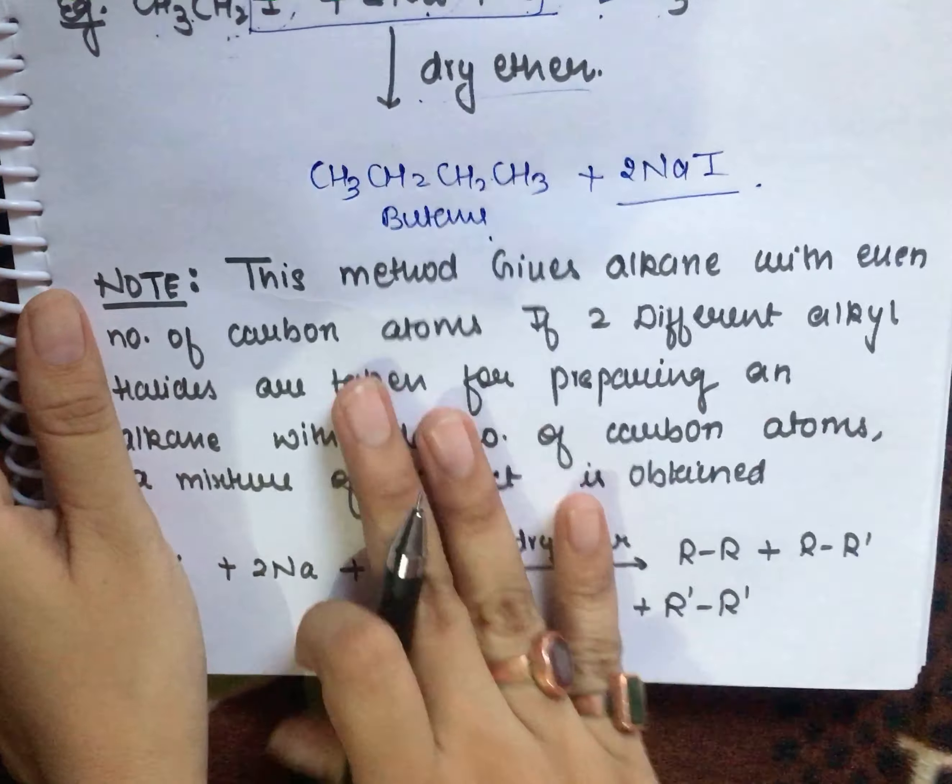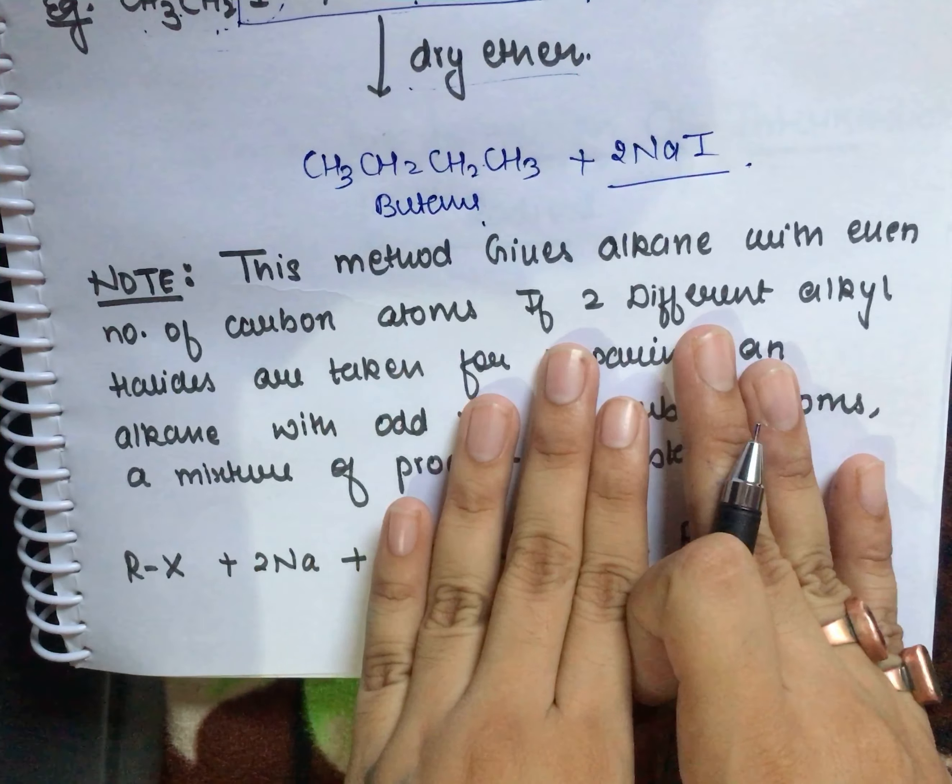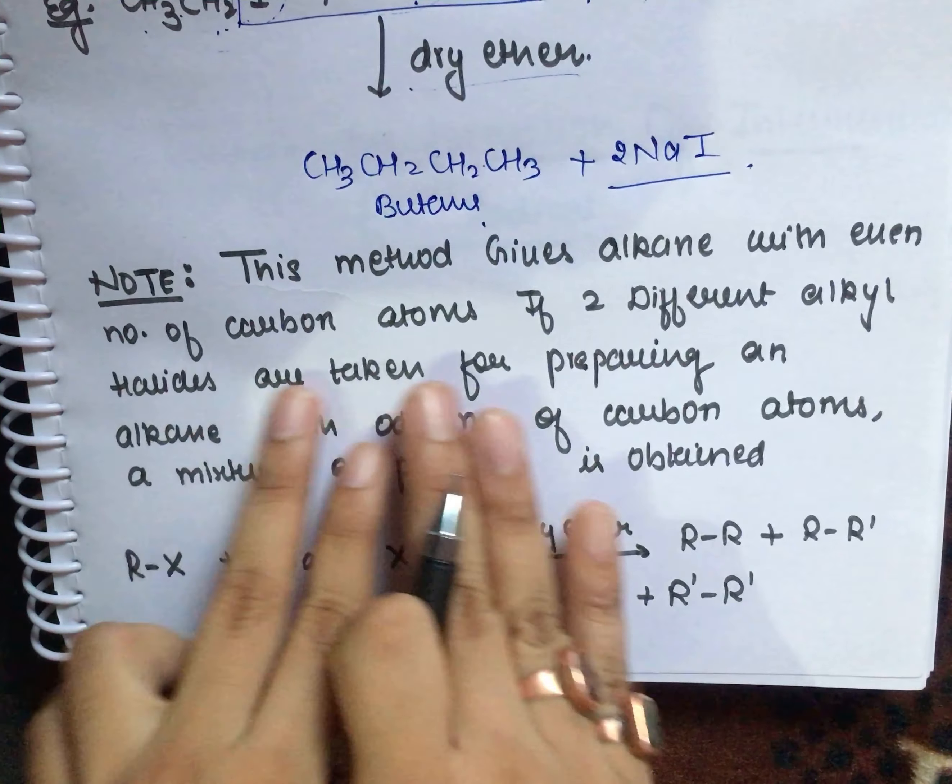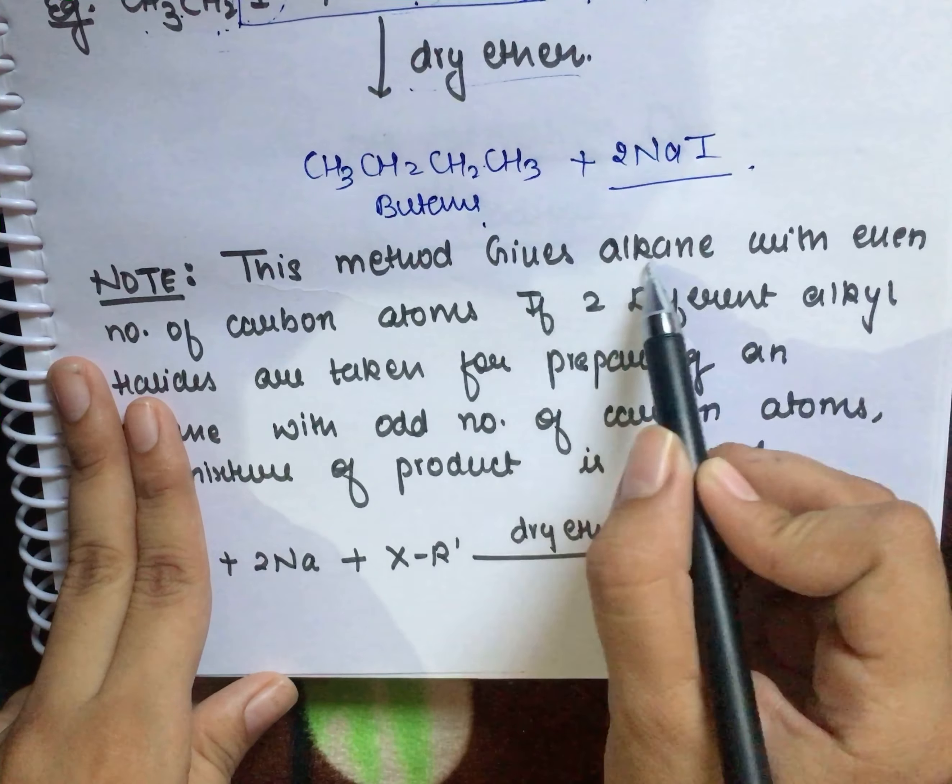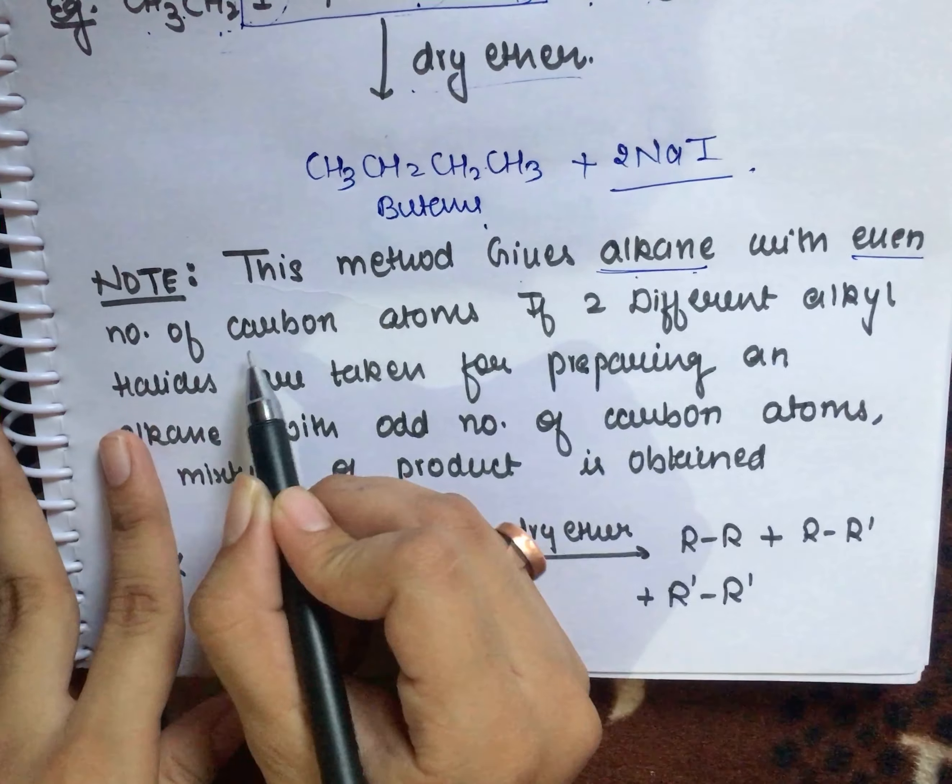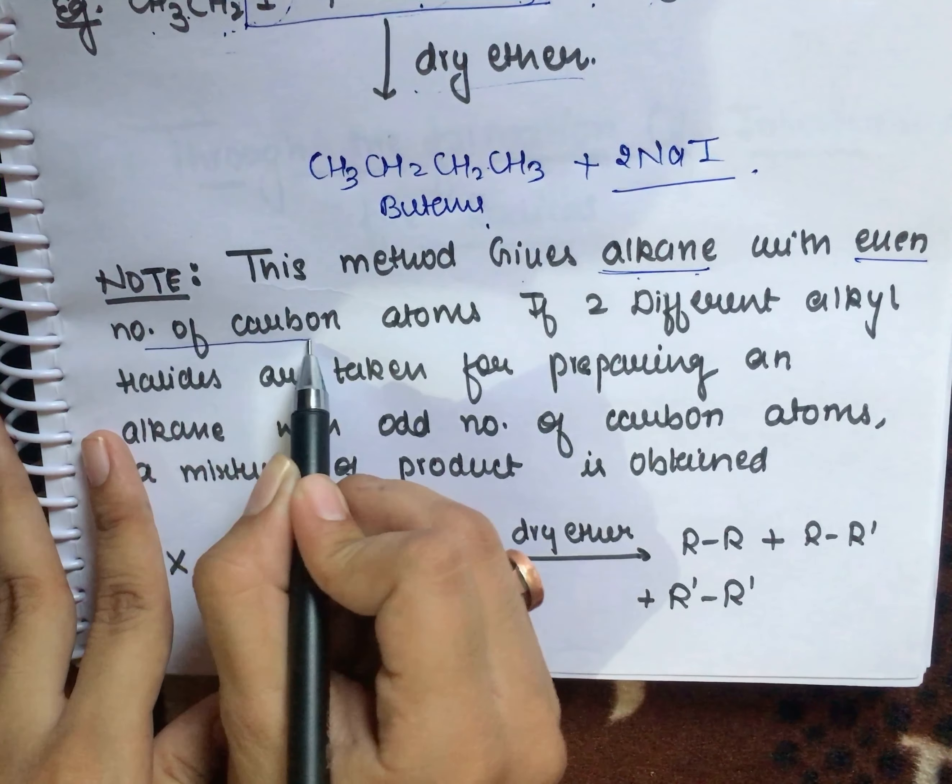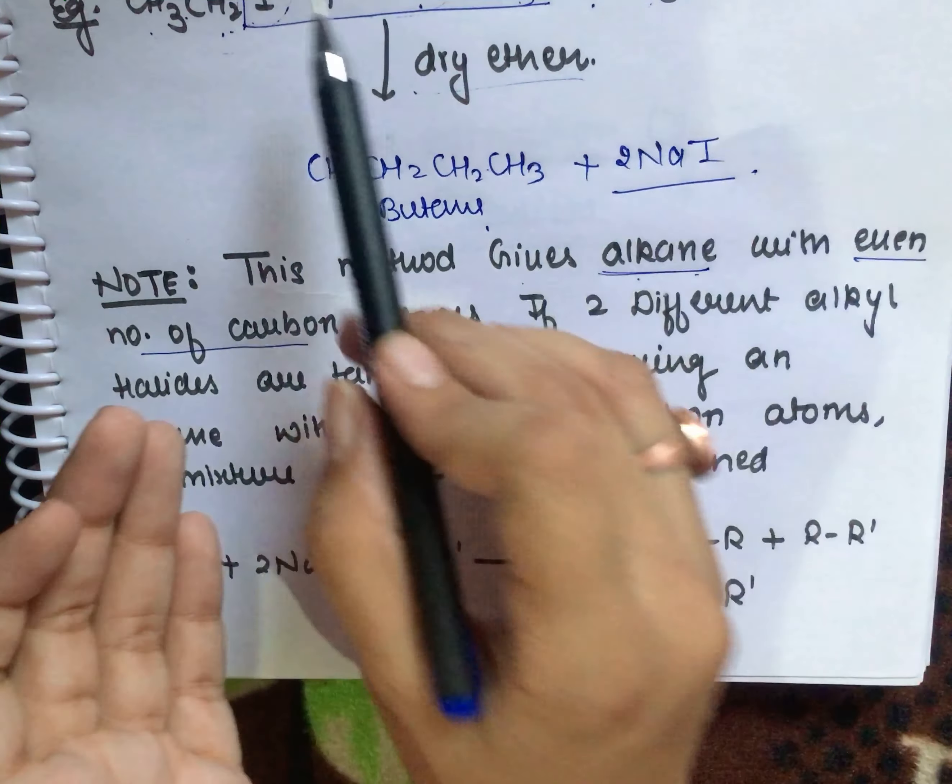Note: This method gives alkanes with an even number of carbon atoms. This method gives alkanes with an even number of carbon atoms.